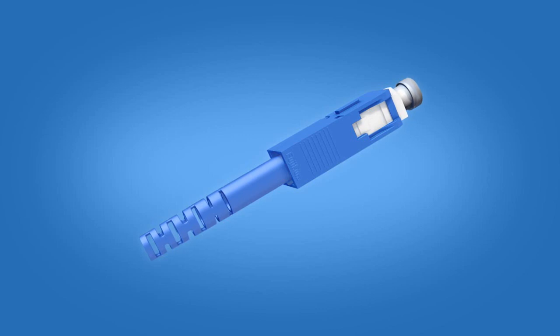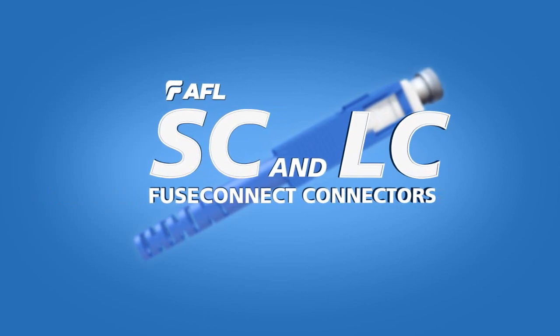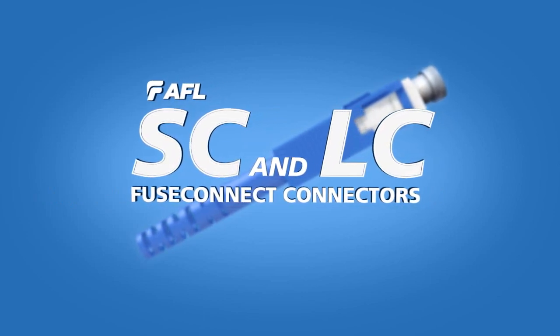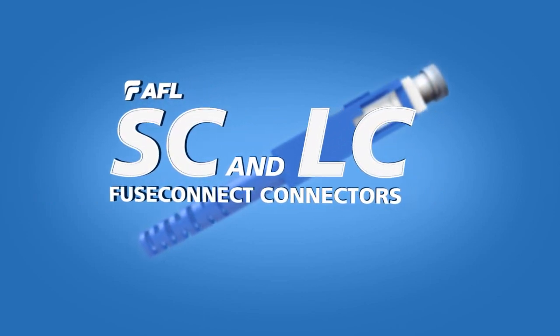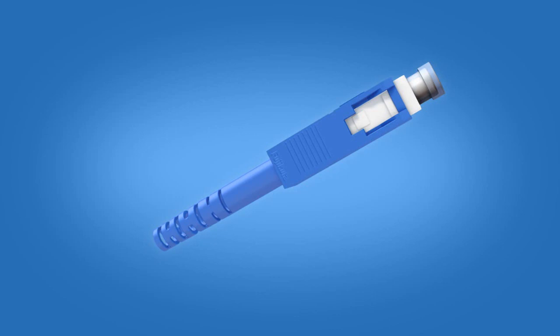This installation video is applicable for AFL's splice-on SC and LC fuse connect connectors on 2 and 3 mm diameter simplex cable. These step-by-step instructions demonstrate the termination of a 3 mm SC fuse connect connector using a Fuji Kora 70S fusion splicer.